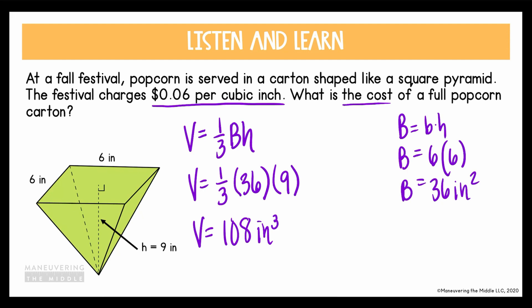But be careful — it actually wants to know the cost of the popcorn, not just the volume. So I'm going to take that volume of 108 cubic inches and multiply it by six cents per cubic inch, and I find that it's going to cost $6.48 per popcorn container.